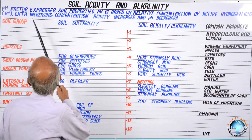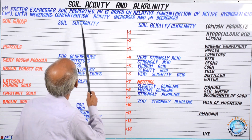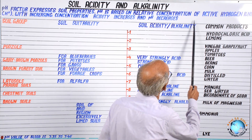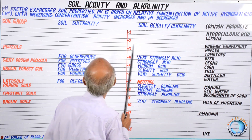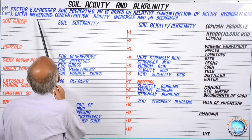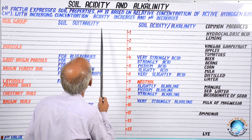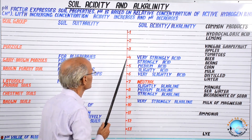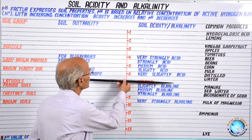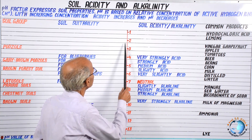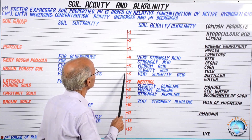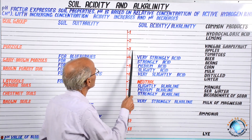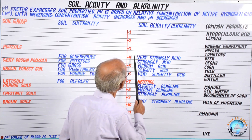pH factor expresses soil properties. pH is based on the relative concentration of active hydrogen ions — that is, H+. With increasing concentration of hydrogen ions, the acidity increases and pH decreases. For example, seven is neutral. If you go up on this pH scale, the concentration of hydrogen ions will increase, but the pH value will decrease while the acidity increases.